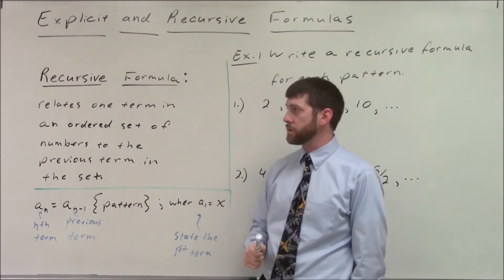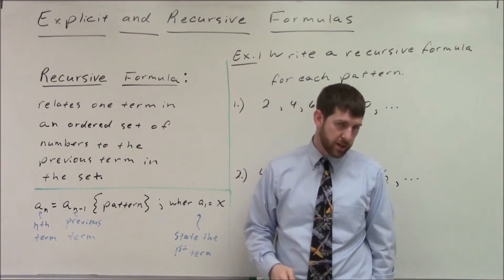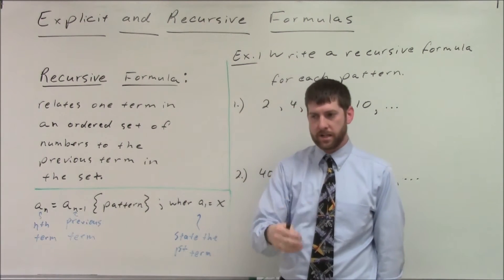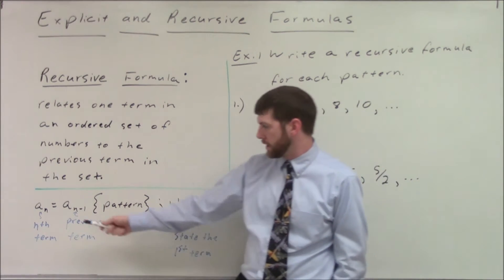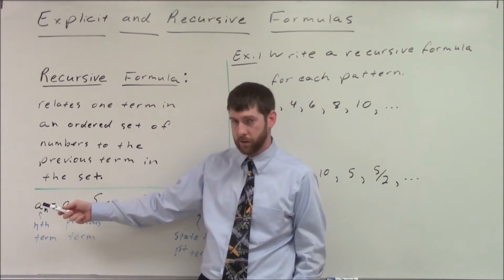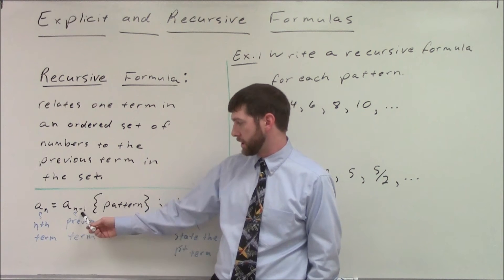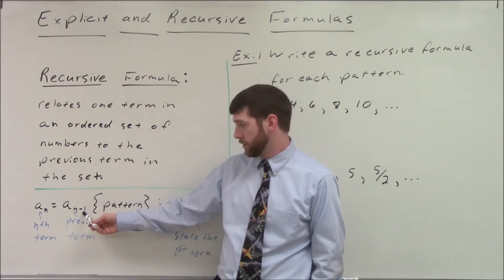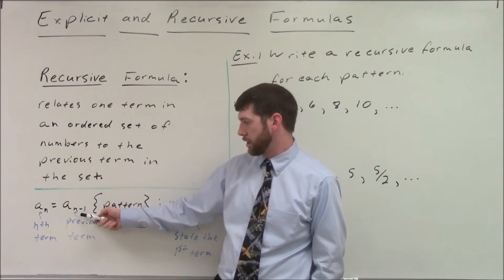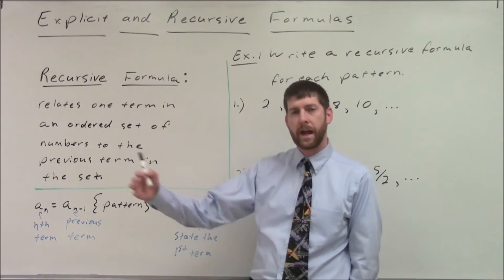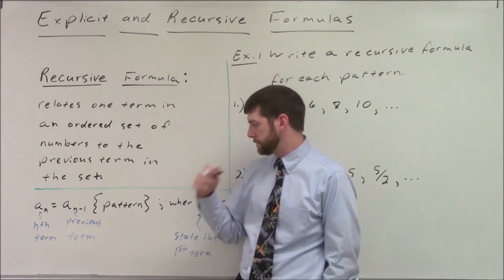A recursive formula relates one term in the set to the previous term in the set. I'm going to tell you what's going on by saying, what did I do to the number right before it? To get a specific number — the nth term — we're just going to take the term right before it. One before the nth term is the n minus one term. Then we execute the pattern on it: whether it be adding, multiplying, dividing, or subtracting.